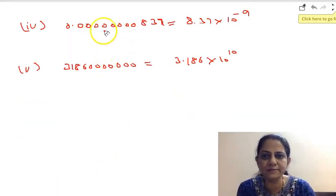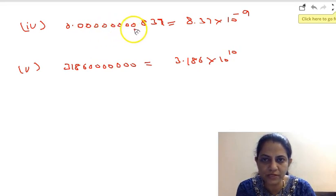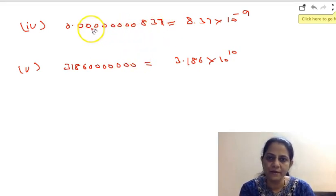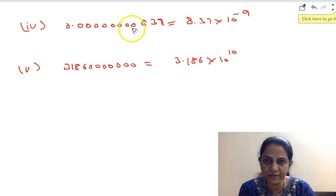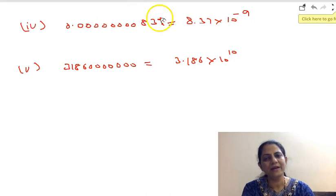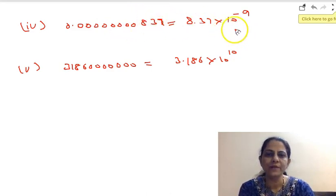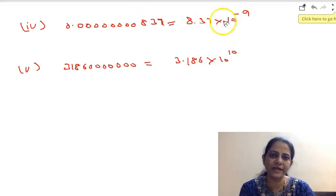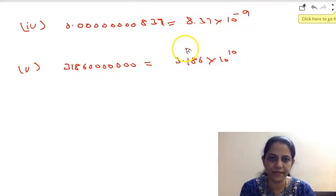Now the fourth part is 0.000000000837. There are 8 zeros. So I can write it as 8.37, shifting the decimal after 8. So it's 8.37 × 10^-9. 8 plus 1 is 9, so that's why the power of 10 is -9.